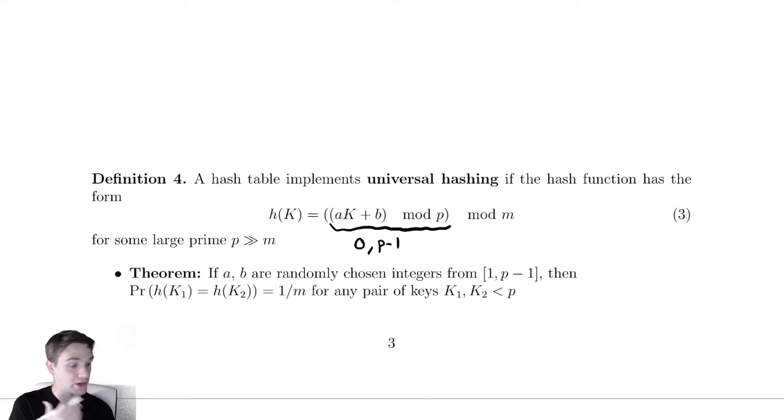The nice thing here is that this has the property that we would really want. So we have this theorem. We aren't going to prove this theorem. We're really not going to use this particular hash function much in the class. We say if A and B are randomly chosen integers from the interval 1 to P minus 1, then the probability that any two keys, K1 and K2, have the same value from this hash function is 1 over M. This is as good as we could hope. There are M locations in the array, and we want that we have as small a probability of getting an overlap as possible. And 1 over M is the best we could possibly do.